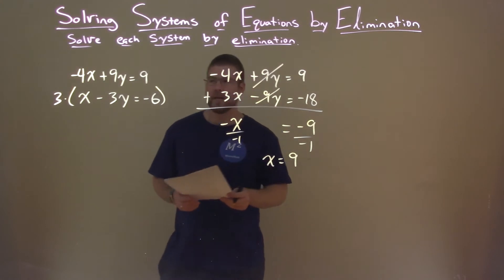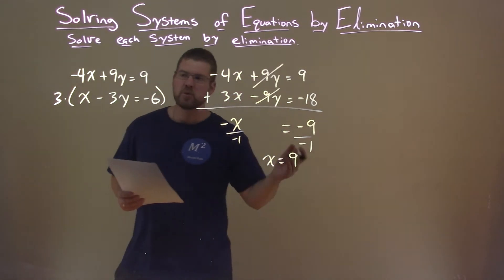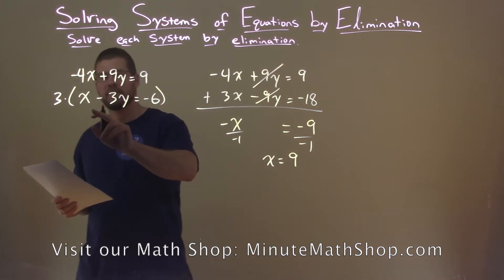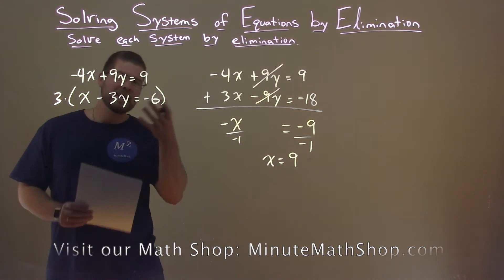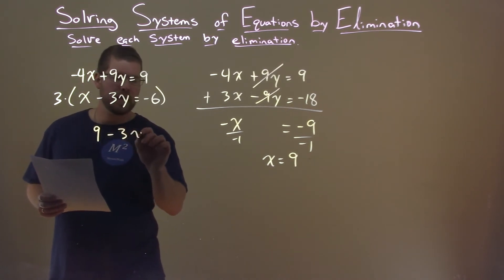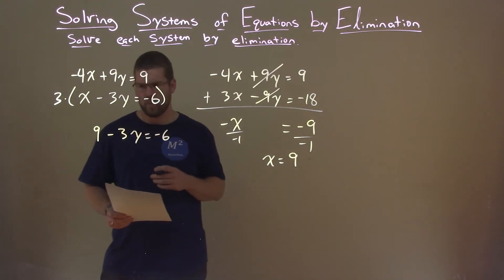So we have our x value. We need to find the y value. So what I'm going to do is pick one of my equations and substitute 9 in for x. I try to find the easier one. I'm thinking maybe the second equation. So instead of x, I'm putting a 9 minus 3y here equals negative 6, and I'm solving for y.